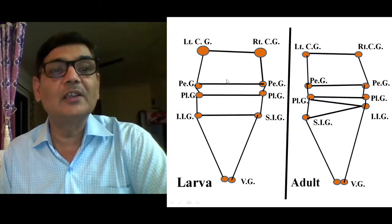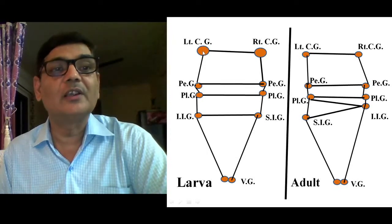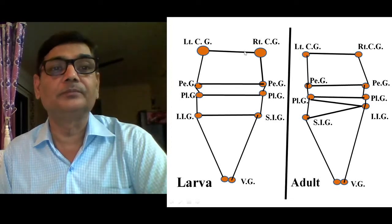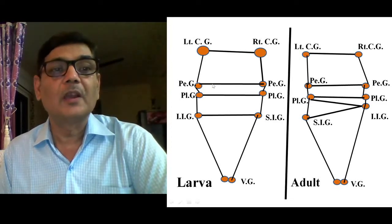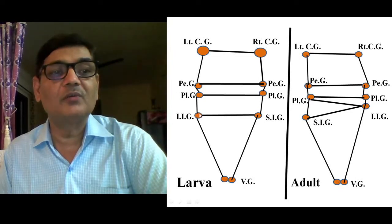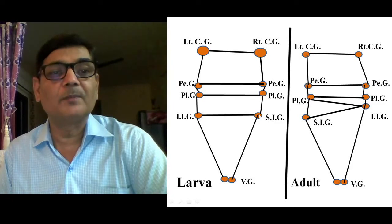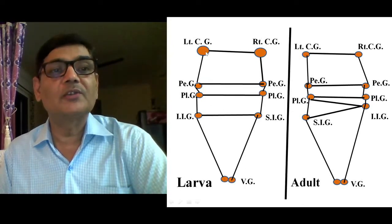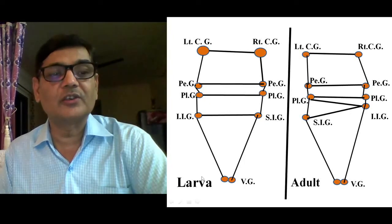Chiastoneury can be understood through this line diagram. On the left side of the diagram, the round structure is the left cerebral ganglion, and on the right is the right cerebral ganglion. There are left and right pedal ganglia, and left and right pleural ganglia. The infra-intestinal ganglion, situated below the intestine, and the supra-intestinal ganglion, present on the upper portion of the intestine, are also visible. Additionally, there are visceral ganglia. This represents the almost symmetrical nervous system structure present in the larval form.